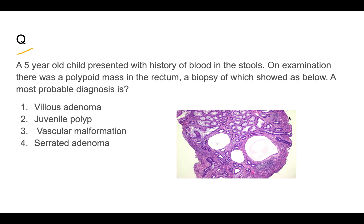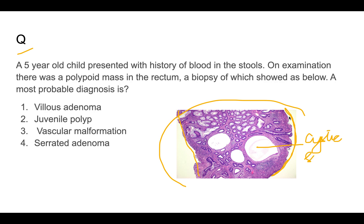Question three: a five-year-old child presented with blood in stools. Examination revealed a polypoid mass in the rectum. Options: villous adenoma, juvenile polyp, vascular malformation, and serrated adenoma. The key is the histology: the polypoid mass has regular margins and contains cystic spaces — dilated spaces inside. These cystic spaces are very characteristic of juvenile polyp.